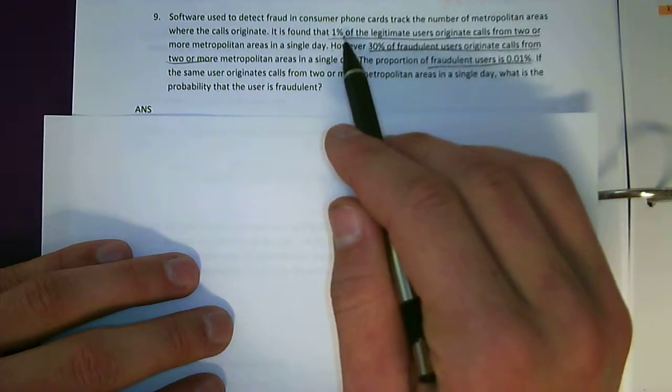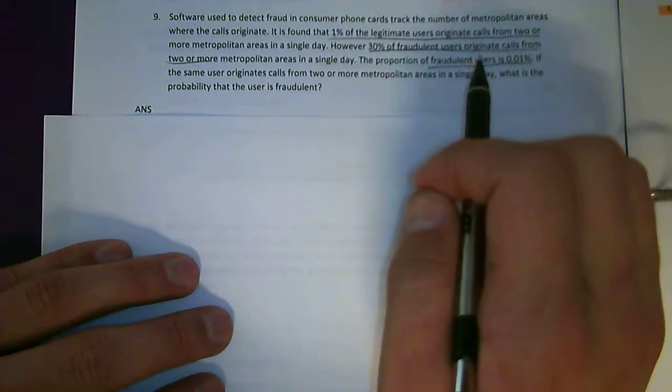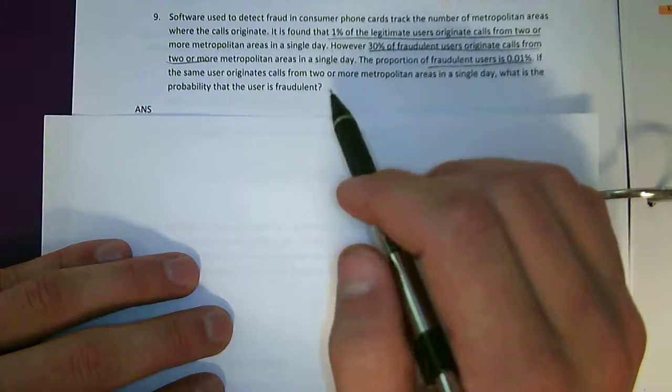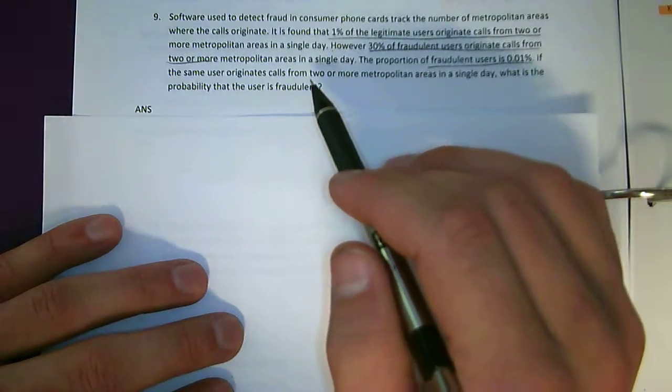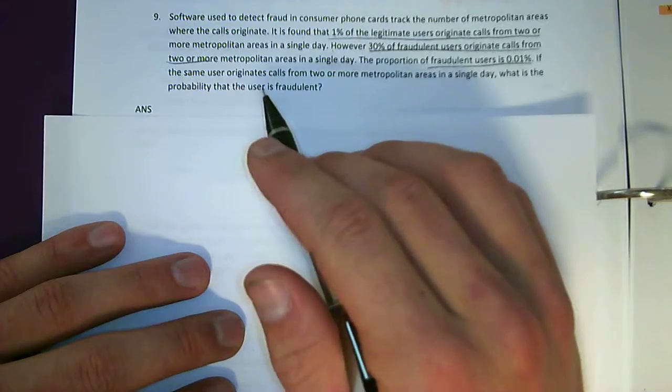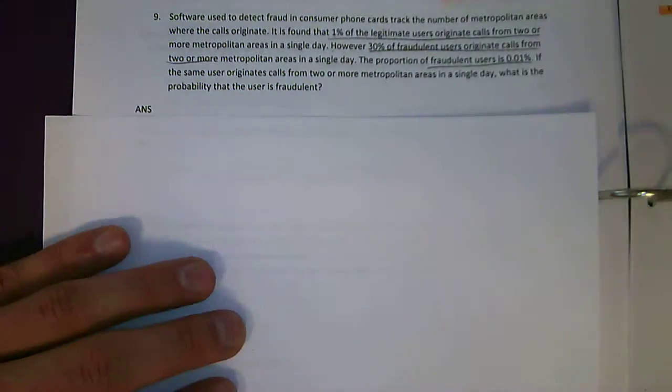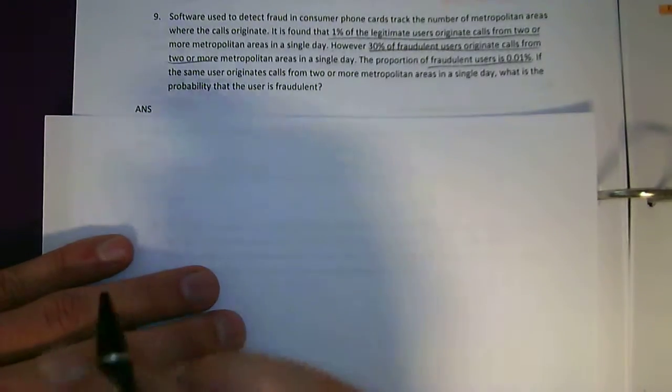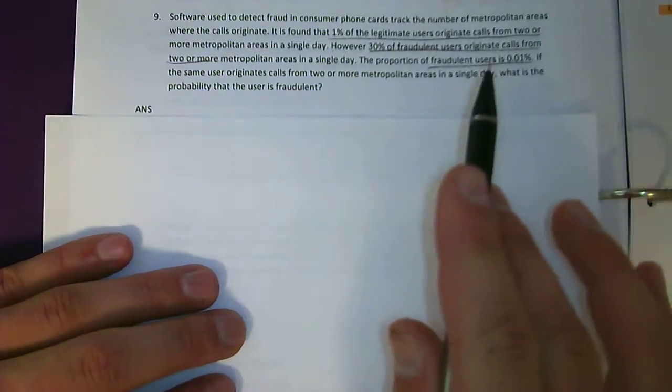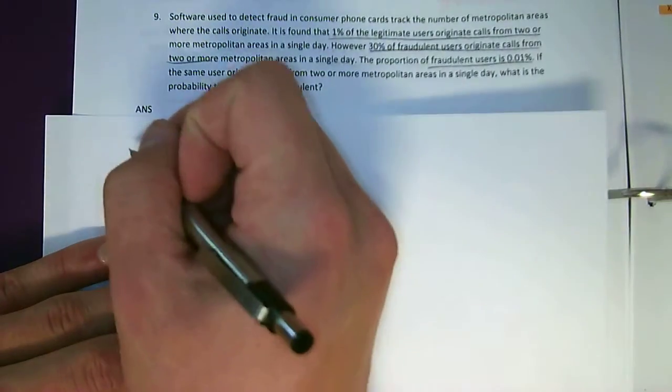I underline the stuff that really matters. We've got 1% of legitimate users originate calls from two or more metropolitan areas in a single day. 30% of fraudulent users originate calls from two or more metropolitan areas. The proportion of fraudulent people to legit people is 0.01%. So if you're trying to find the same user originate calls from two or more metropolitan areas in a day, what is the probability that the user is fraudulent? So the difficult part about this problem is really the fact of trying to lay it out and define how the probabilities are supposed to be.